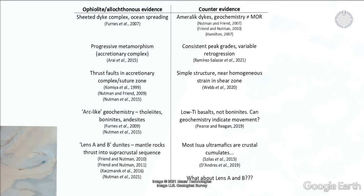There are also arguments based on geochemistry — an arc-like geochemistry of tholeiites, boninites and andesites — but more recent work has shown that the boninites are actually low-titanium basalts, and I would question whether geochemistry alone can indicate allochthony. In all this, we have the lens A and B dunites, which have been interpreted as mantle rocks thrust into the supercrustal sequence. If true, this would indicate major crustal-scale thrust faulting and be good evidence that part of the Ischewod sequence is allochthonous. Most Ischewod ultramafics are crustal cumulates — widely agreed upon — so in this study we wanted to revisit lens A and B, which are still interpreted in a mantle framework.